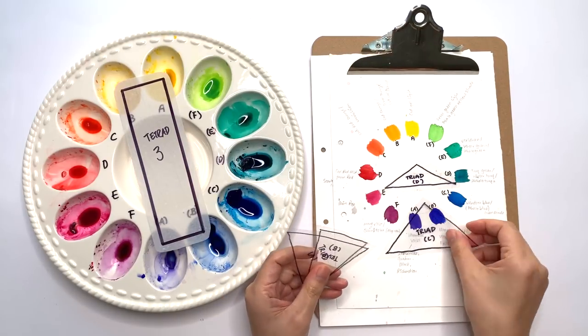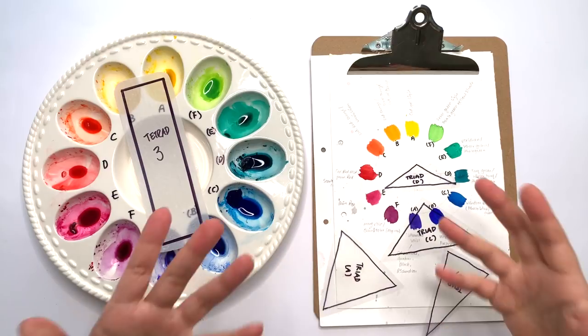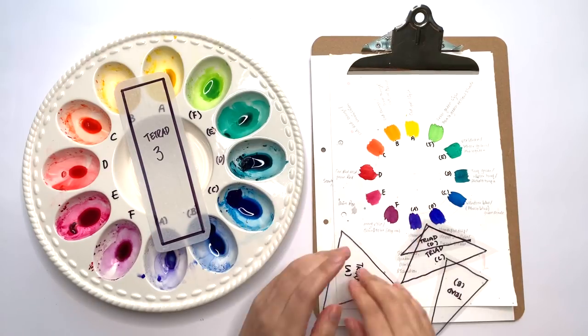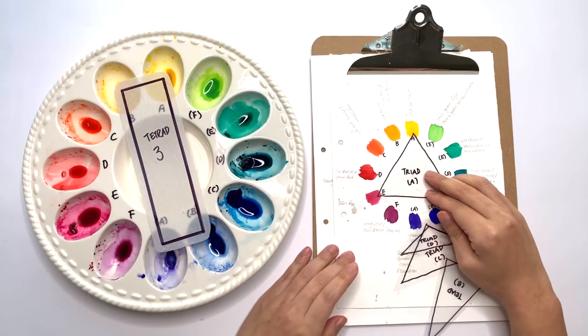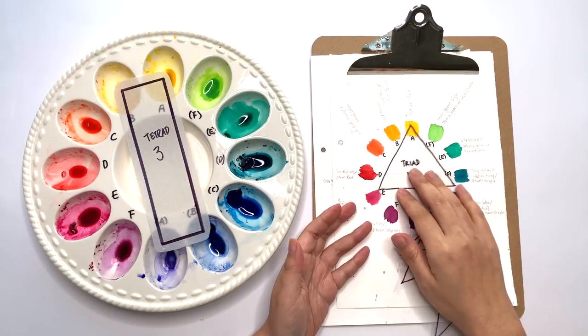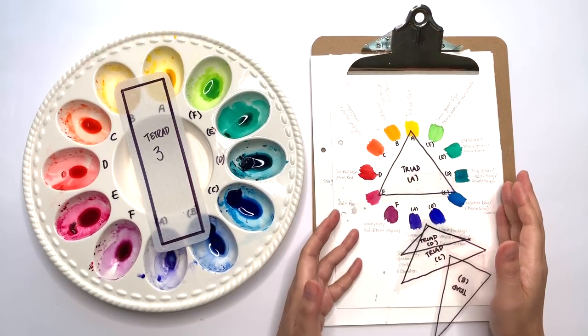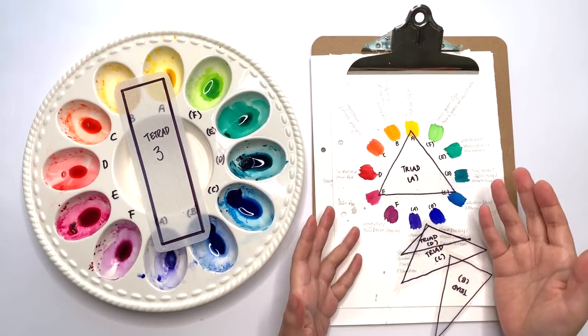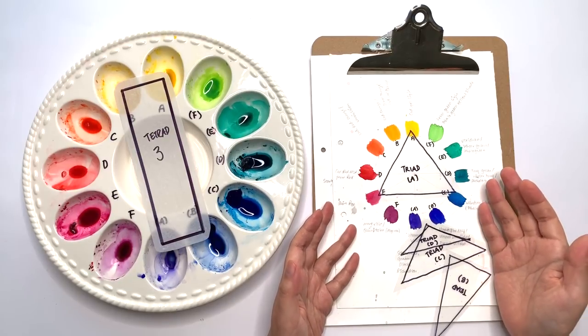You can see that's very well used. But to do the tetrad I made these little triangles like this and when I went to paint the little boxes for color schemes I use this to keep track.